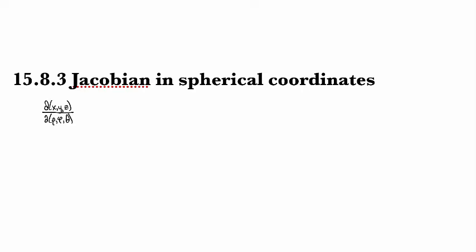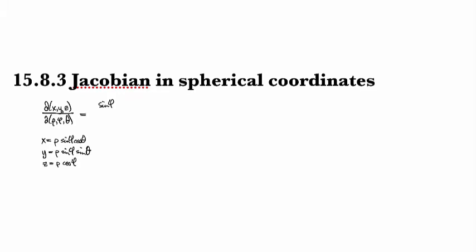So we're computing the Jacobian in Cartesian with respect to spherical. Just for reference on this side, I'll write down what my x, y, and z are. So we've got x = ρ sin(φ)cos(θ), y = ρ sin(φ)sin(θ), and z = ρ cos(φ). Starting with x across the top, we have the partial derivatives: sin(φ)cos(θ), then ρ cos(φ)cos(θ), and then −ρ sin(φ)sin(θ) when θ gets differentiated.